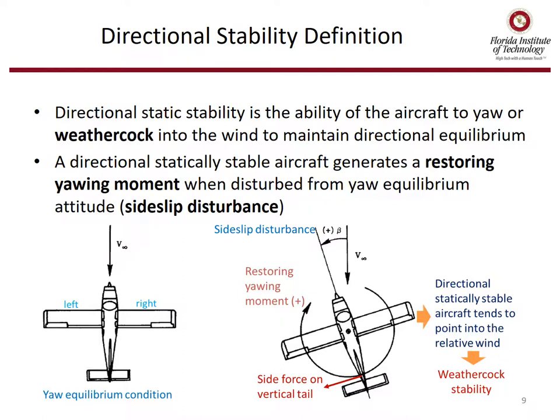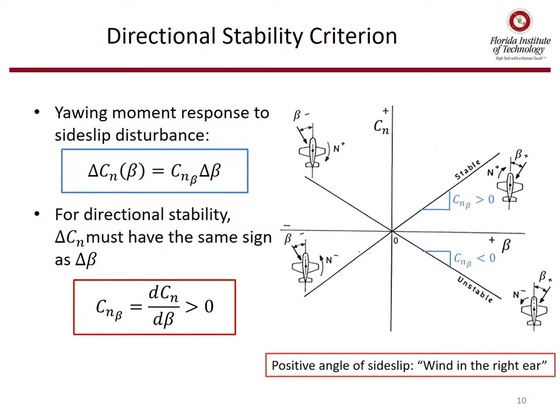Directional static stability is the ability of an aircraft to yaw, or weathercock, into the wind to maintain directional equilibrium. A directionally statically stable aircraft generates a restoring yawing moment when disturbed from yaw equilibrium attitude — in other words, a sideslip disturbance. The slope of that equation, C_n beta, needs to be positive for a restoring moment to oppose the change in sideslip.